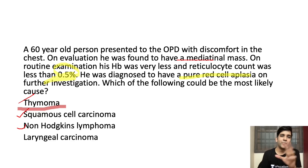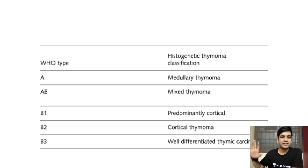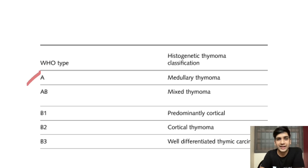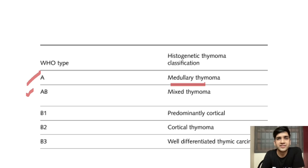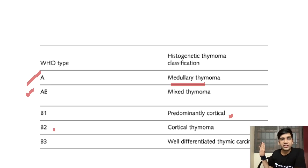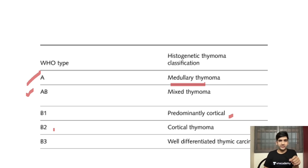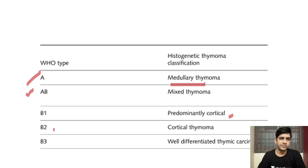Let's have a quick look at thymoma classification. There is a new WHO classification: Type A, which is medullary thymoma on microscopy; Type AB, a mixed cortical-medullary thymoma; B1, predominantly cortical thymoma; B2, purely cortical; and B3, a well-differentiated thymic carcinoma — essentially like a squamous cell carcinoma, because the epithelial element of the thymus is squamous epithelium. So we get a squamous cell carcinoma-like well-differentiated thymic carcinoma. This is the latest WHO classification.